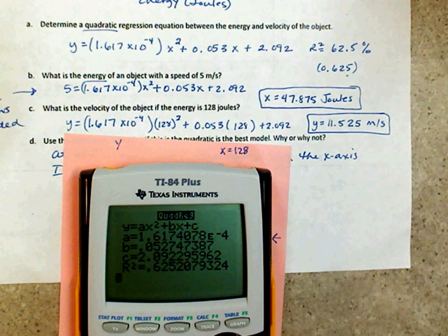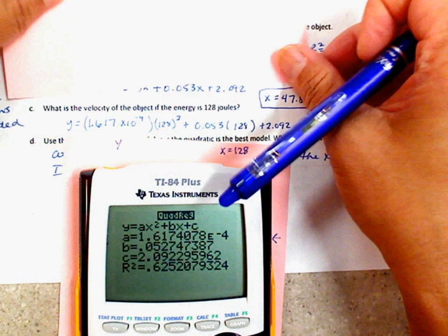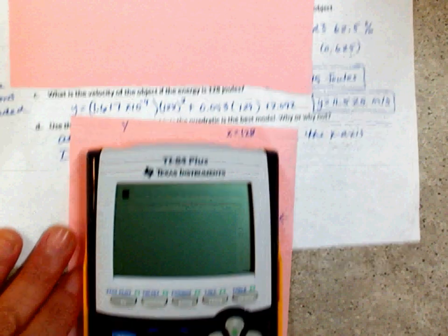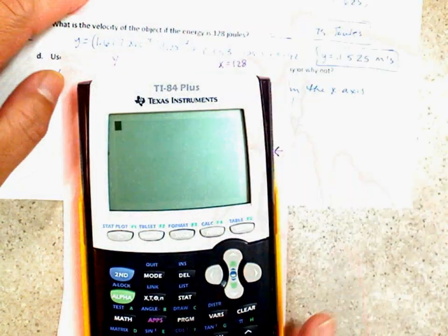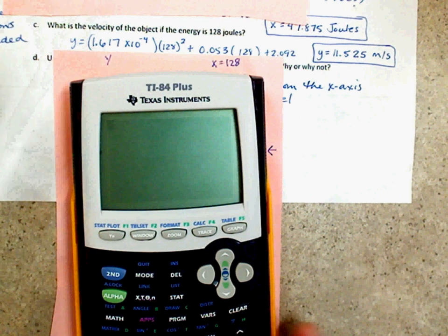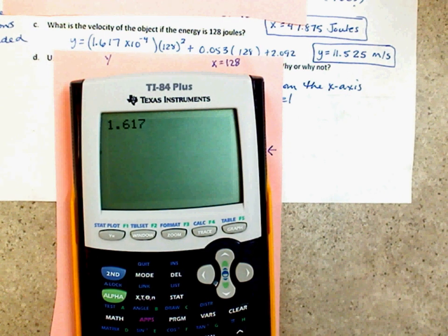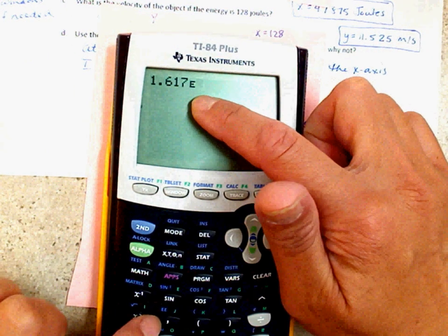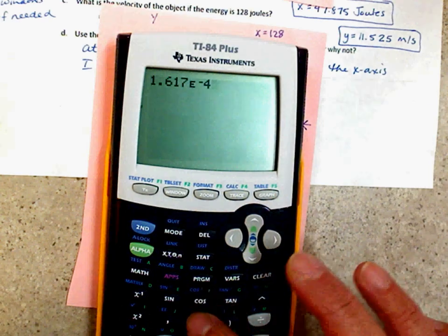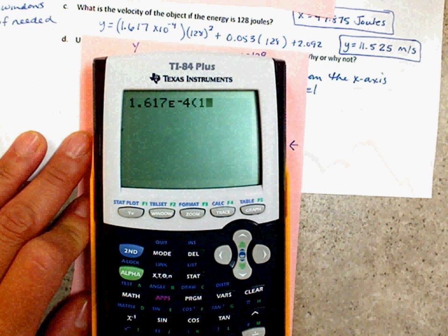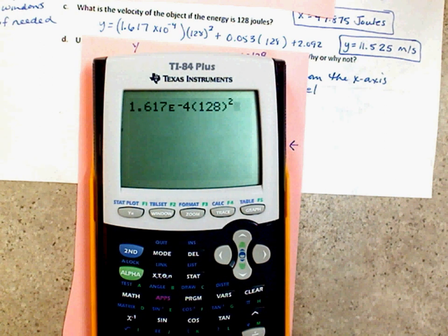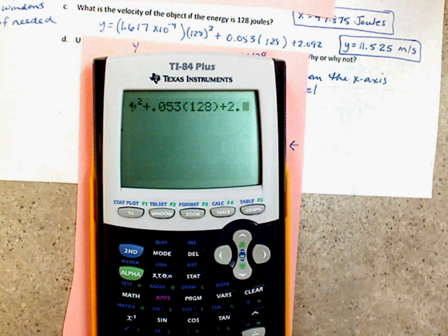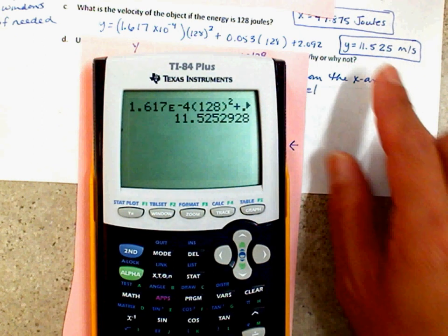You guys ready? Alright. Let me hide some other stuff. There we go. Is that better? Because we're going to type this in. Second, quit. Just like that. Here we go. Let me move this so you guys can see what I'm typing in. Alright. So I type 1.617. Here's E. Right here. See E-E. Second E. It's not going to write E-E. But that's times 10 to the negative 4 parentheses.